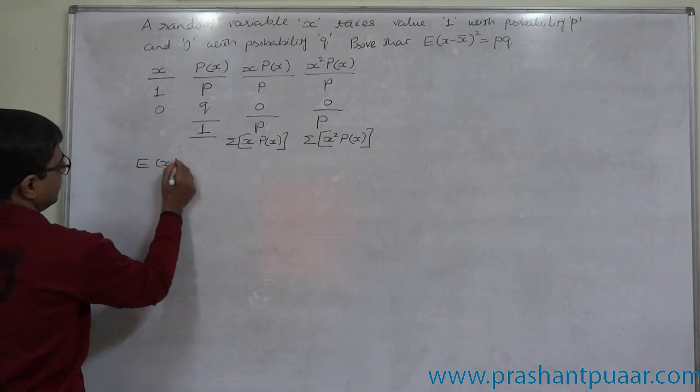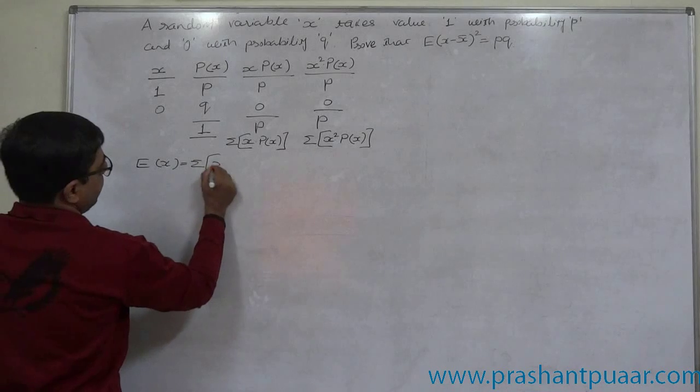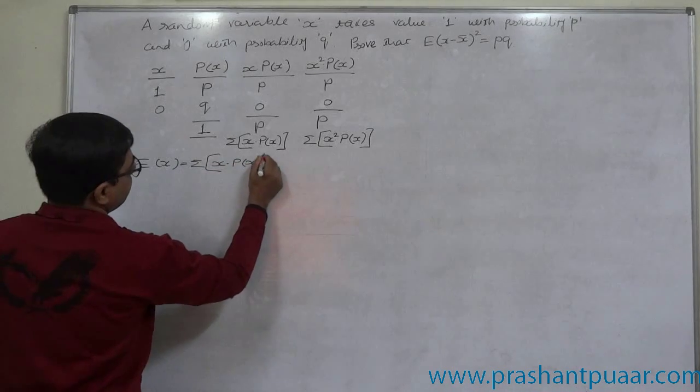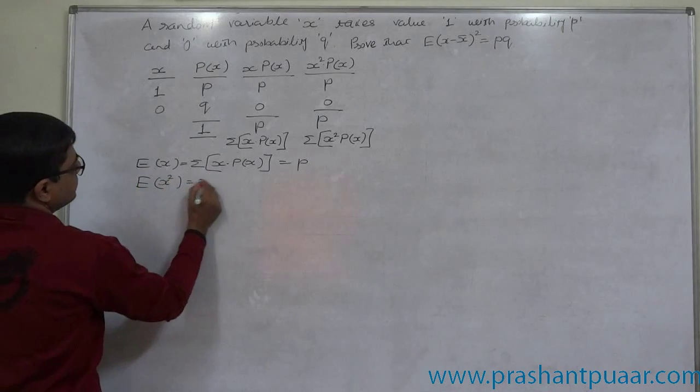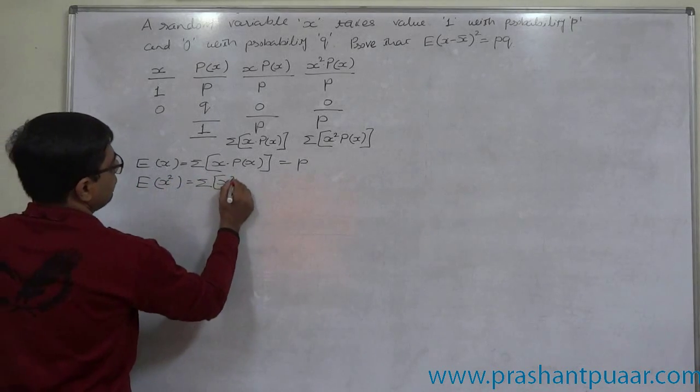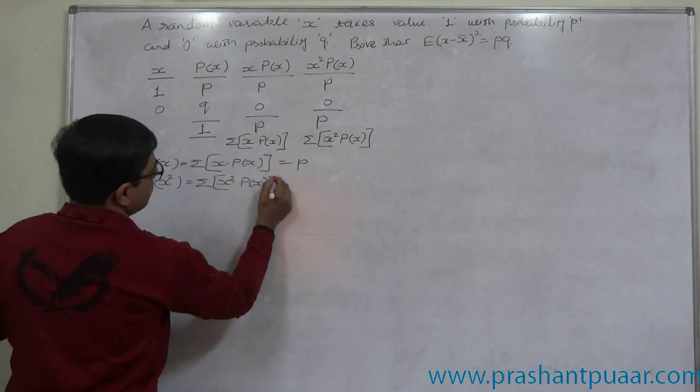Summation of this total is also P. E of X is sigma X into P of X and that is P. E of X square that is sigma X square into P of X is also P.